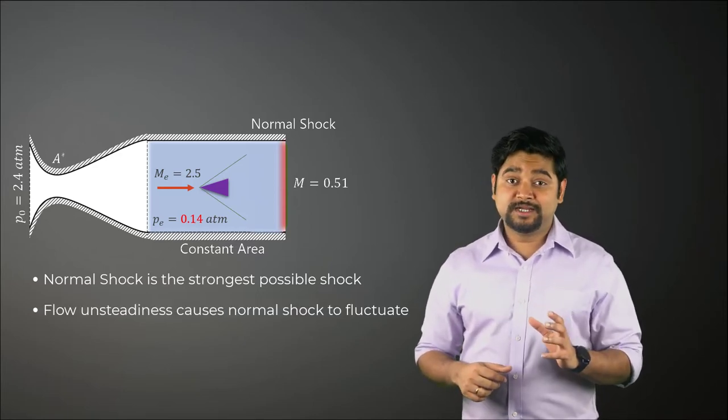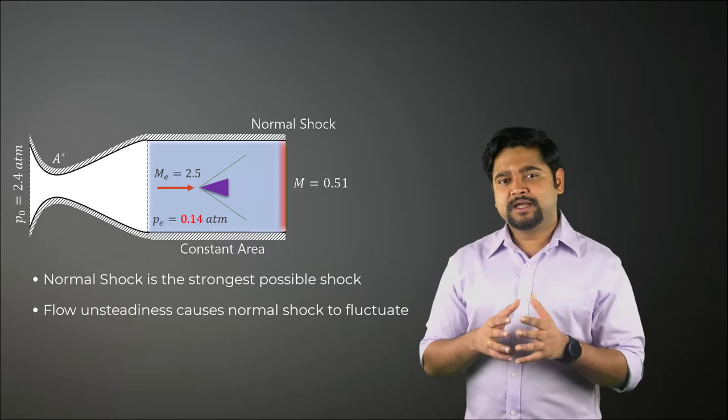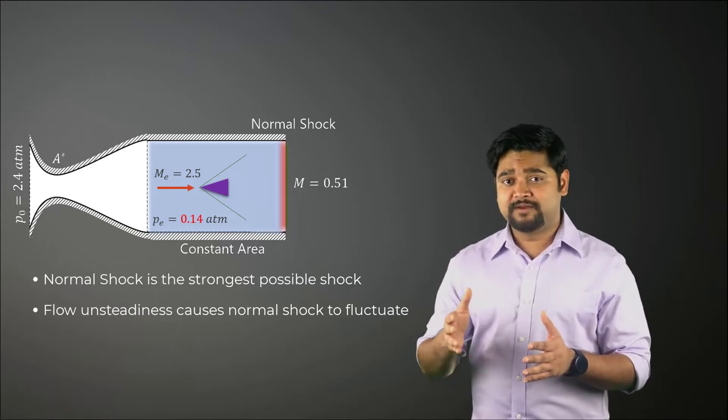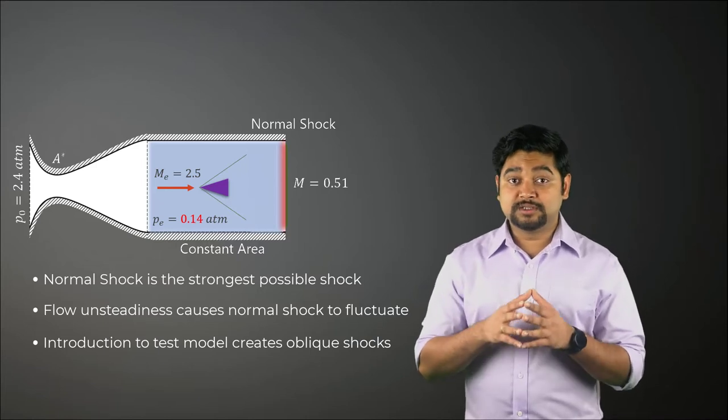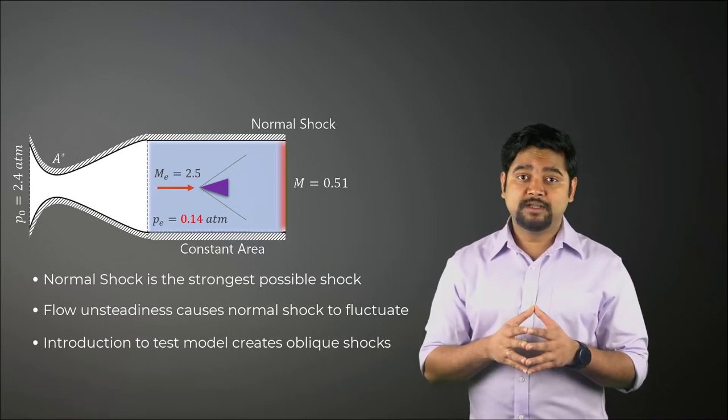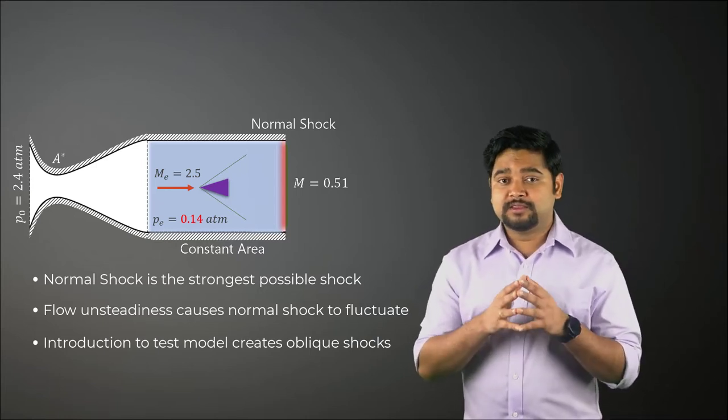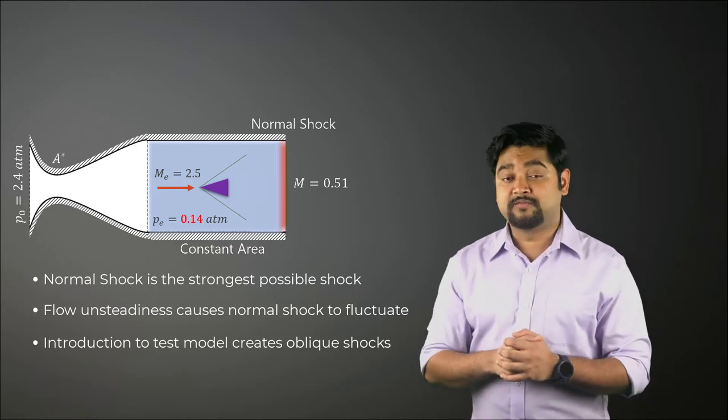Moreover, the flow unsteadiness and instability can cause the normal shock to move and fluctuate constantly. This will give rise to uncertainty about the quality and quantity of the flow in the constant area test section of the wind tunnel.